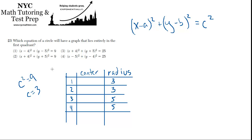Now where are the centers? For choice 1, it's (x − 4), so a is 4 — the x-coordinate of the center is 4. And since it's (y − 5), the y-coordinate is 5. For choice 2, it's plus 4 and plus 5, so a must actually be negative 4, and b must be negative 5.